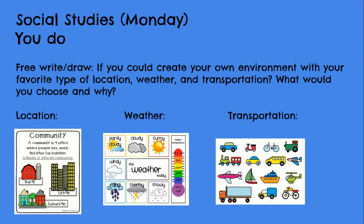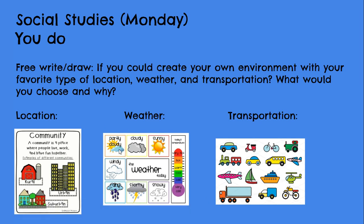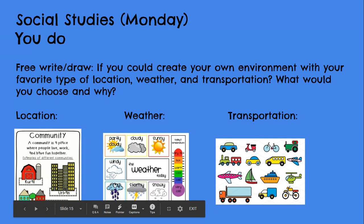Pick a weather for your location. It could be partly cloudy, cloudy, sunny, windy, rainy, stormy with lightning and thunder, or snowy. Also decide on the temperature — very hot, hot, warm, cool, cold, or very cold. Think about which weather would go with that temperature.